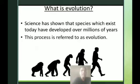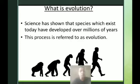Science has shown that species which exist today have developed over millions of years. This process is referred to as evolution. Human evolution refers to the evolution or development of man from his earliest ancestors.